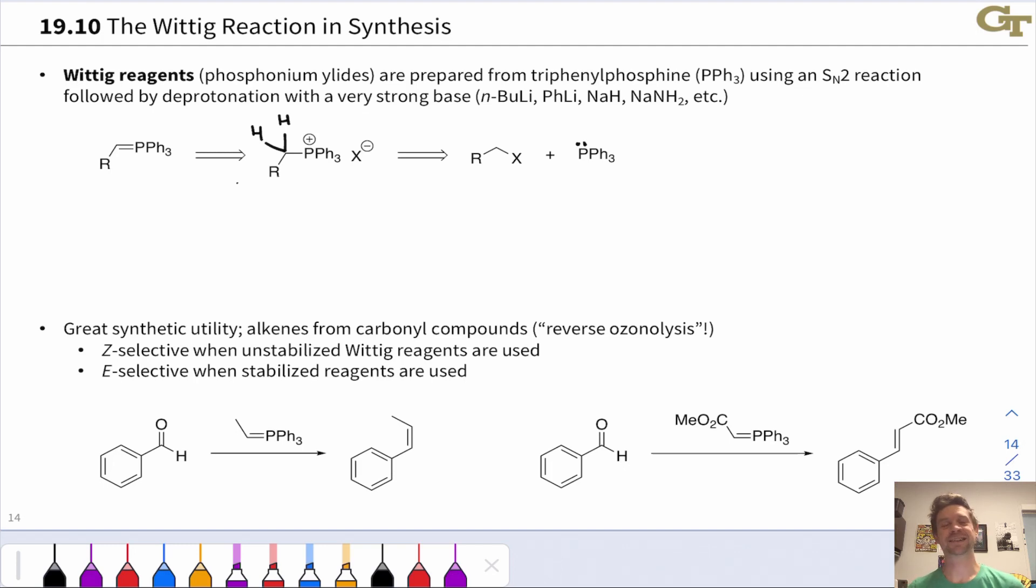Now the phosphonium ylid is a reactive intermediate. It's not something that we can put in a bottle and store. So it needs to be made from stable starting materials and used up very quickly.